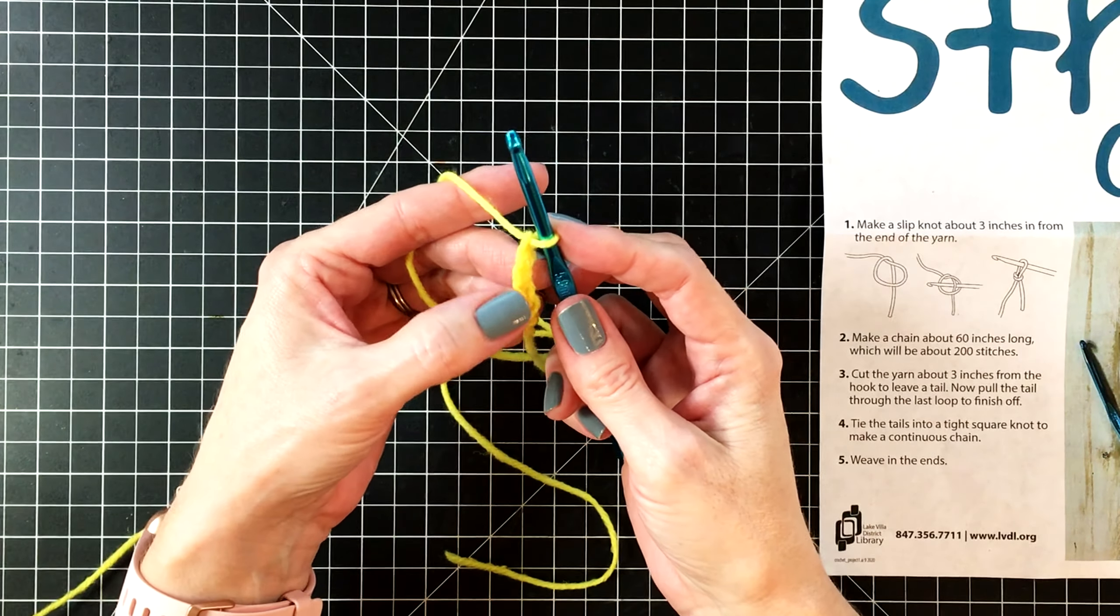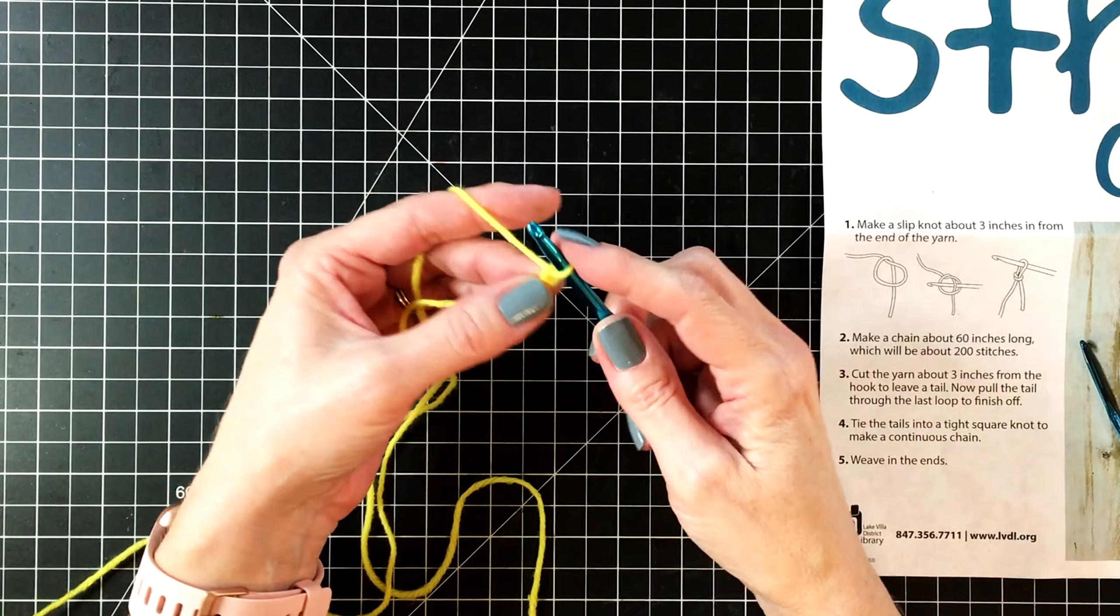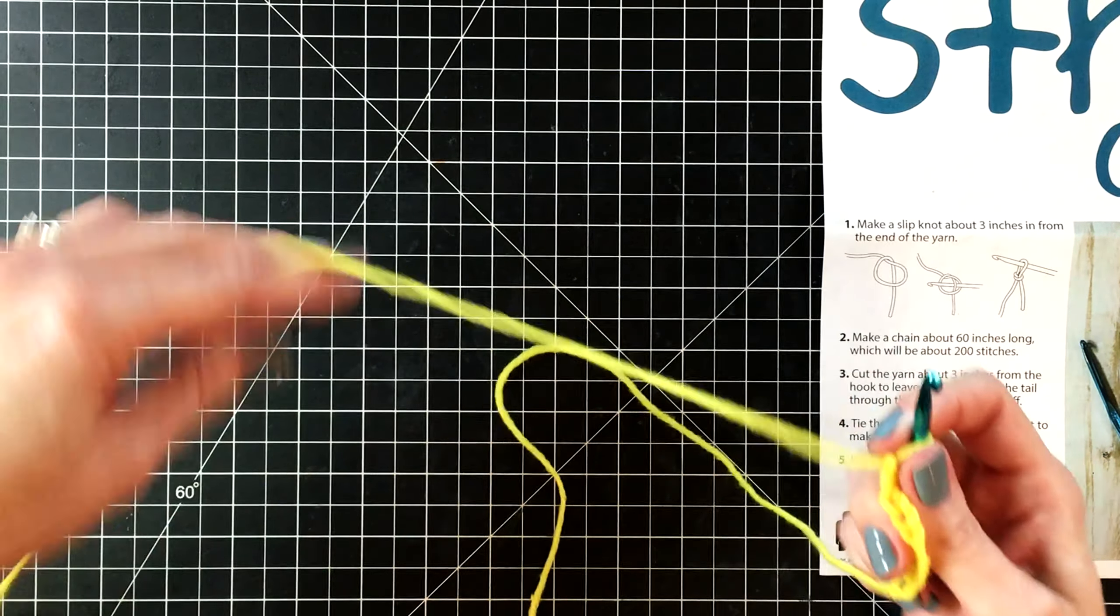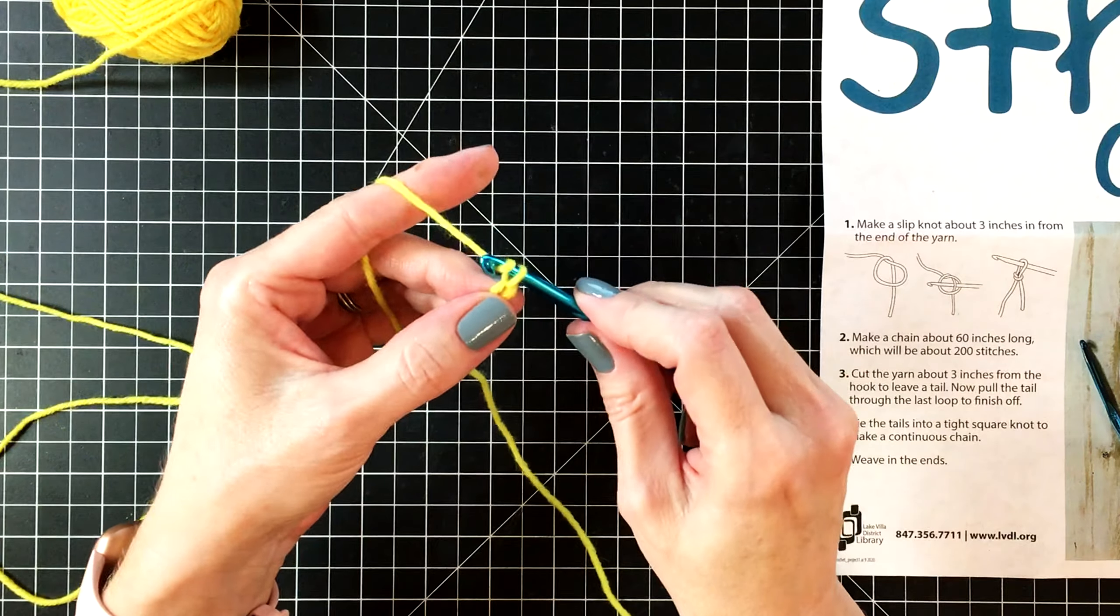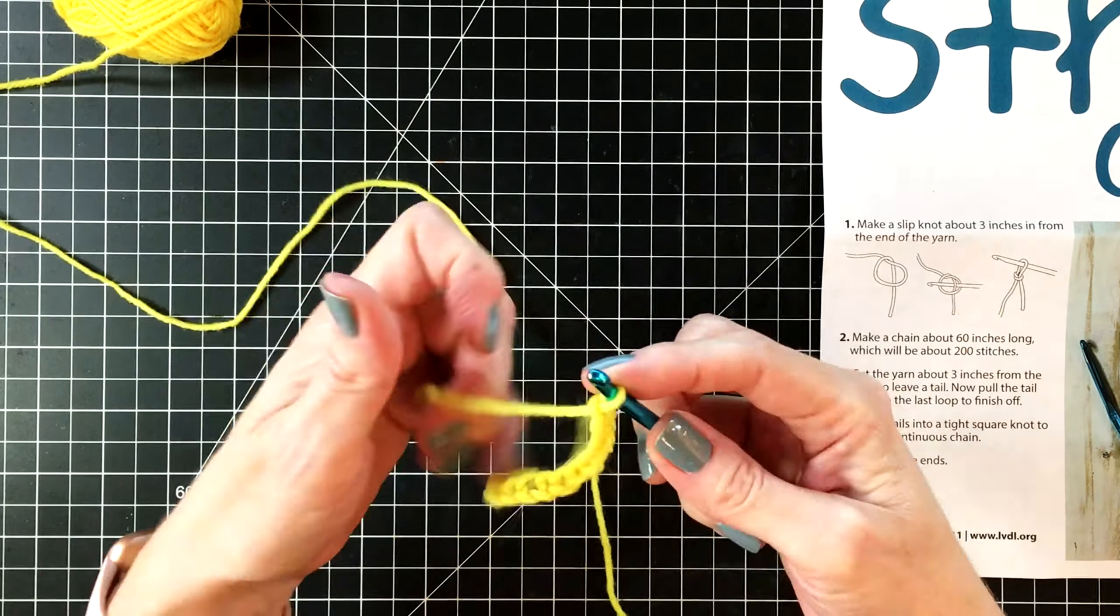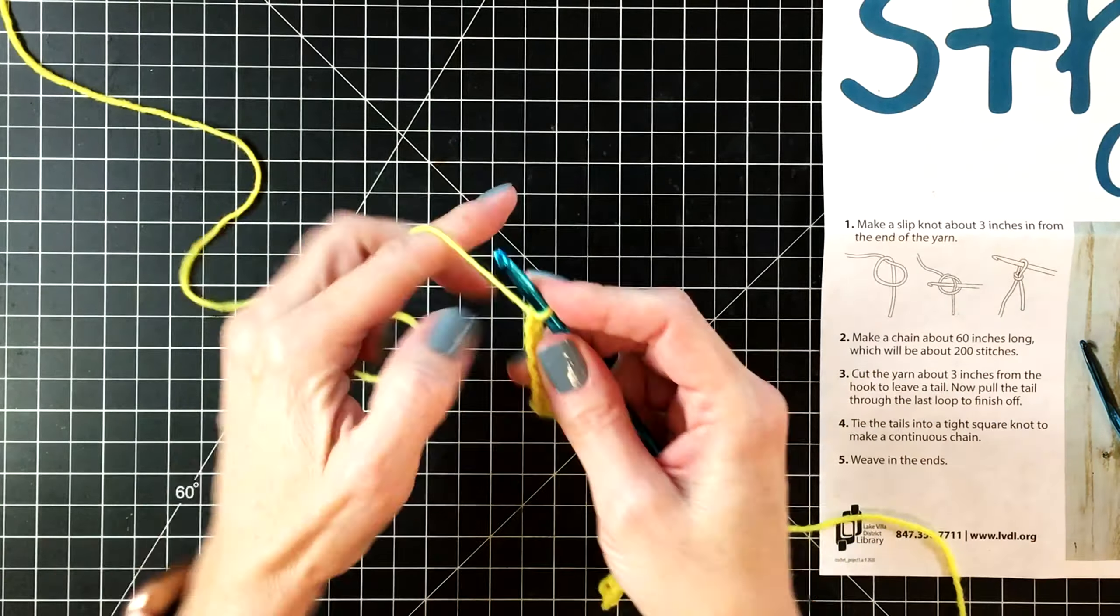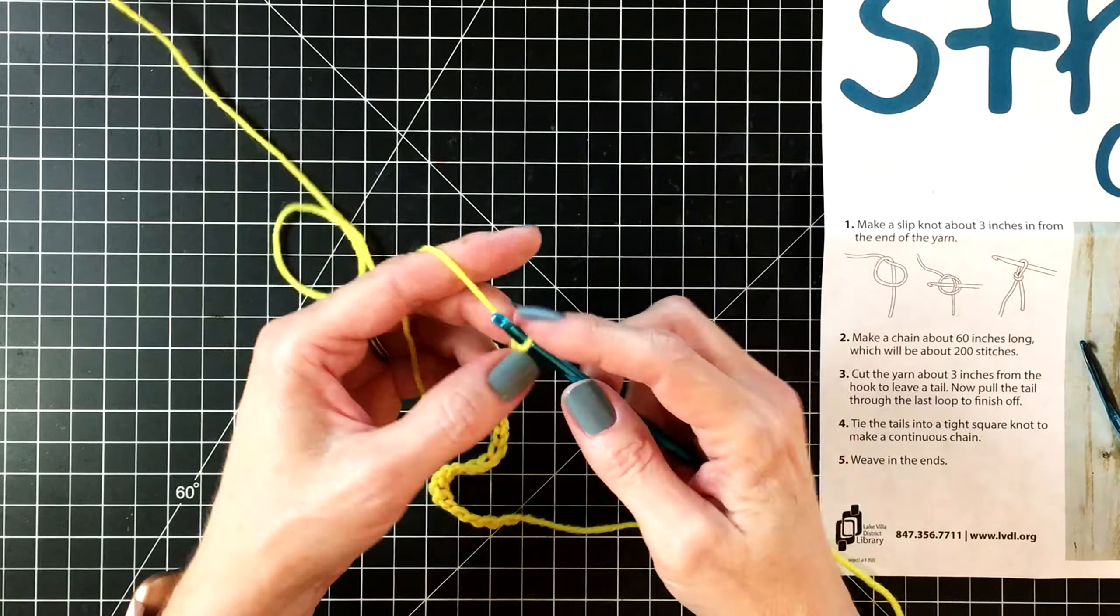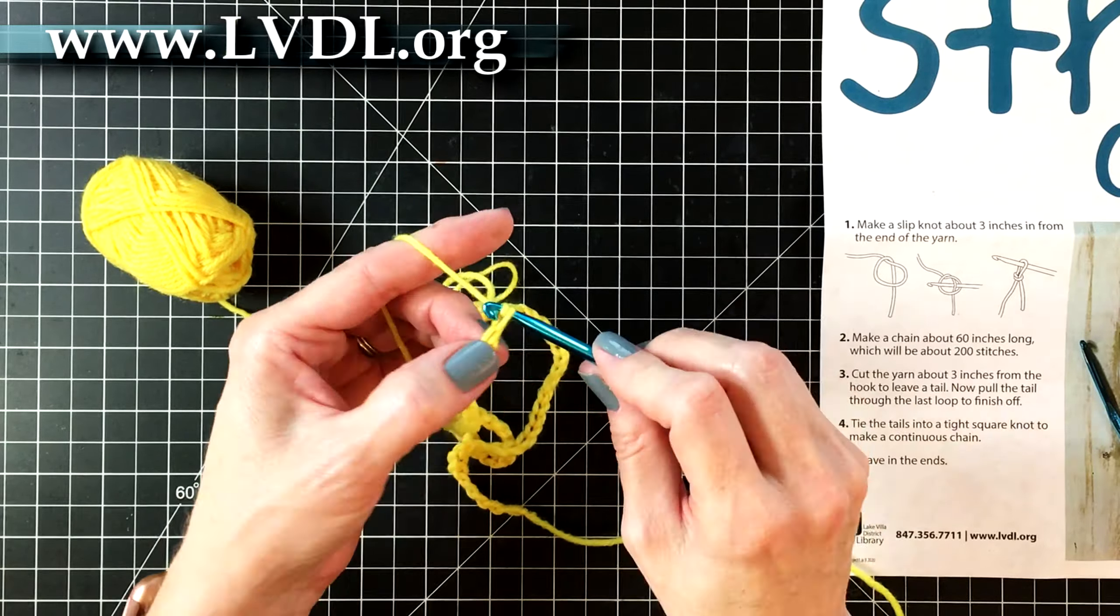So we are going to chain 200 chains. I am going to speed up this video so that we're not here all day. Once you catch the crochet bug you're going to want to crochet all the time. It is really a fun hobby. It's a very portable hobby. You can put it in your backpack and take it with you on the go. Or you can just crochet at home in front of the TV. While I'm speed crocheting here I wanted to mention that we have a lot of wonderful programming going on at the Lake Villa District Library. And to find out about all of these programs you can go to our website at lvdl.org and look at the calendar.